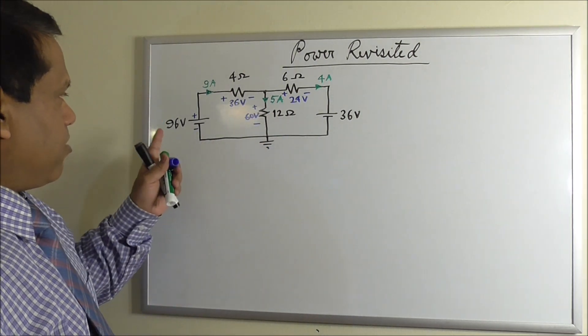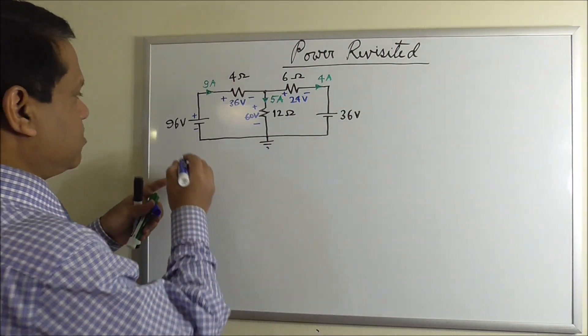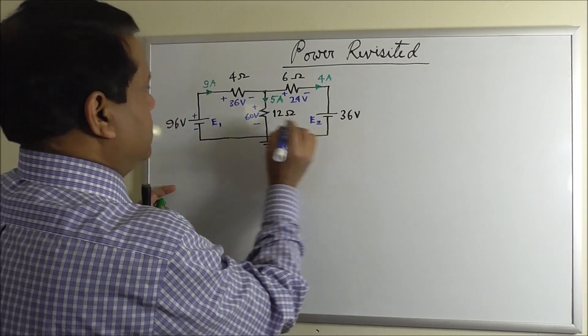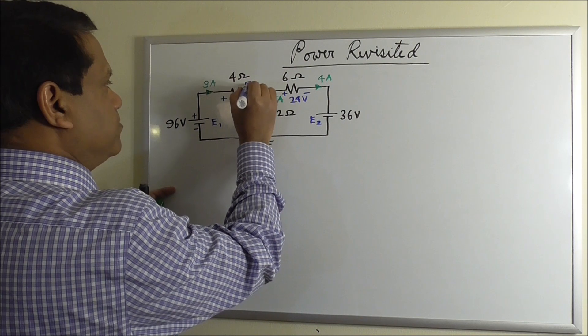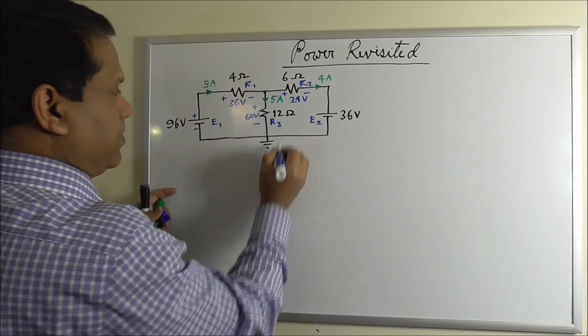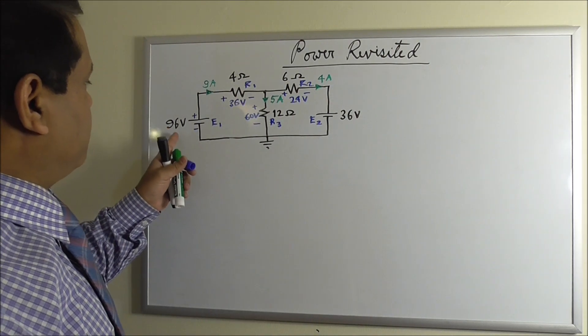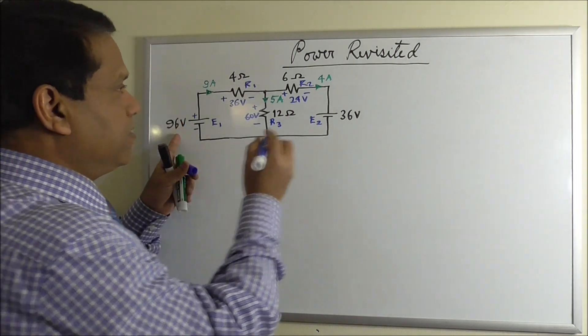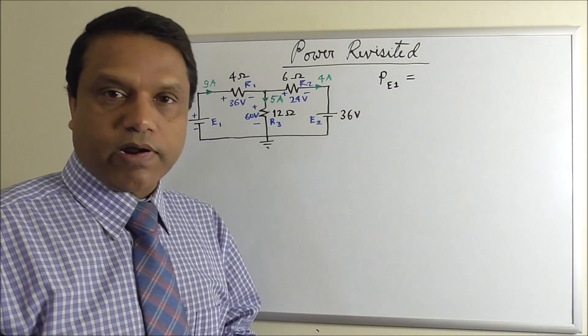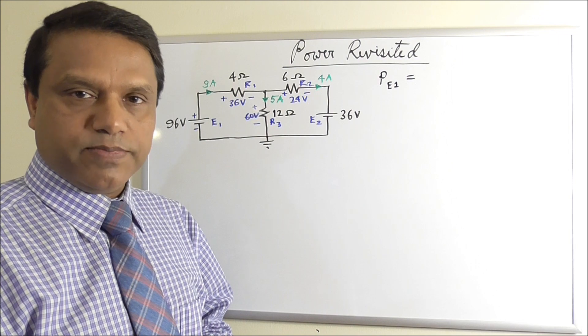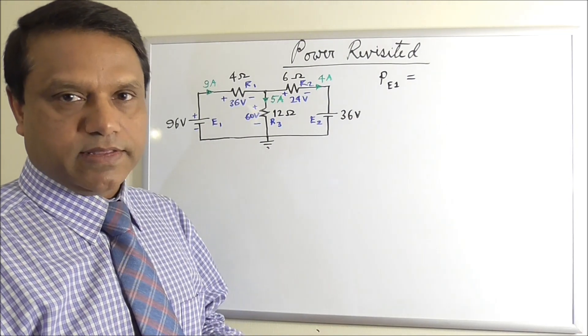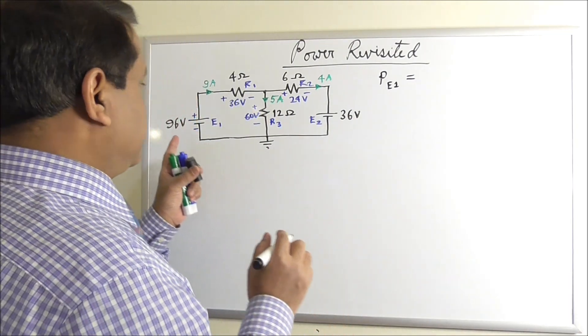Now, what is the power of this power supply? Let's call this E1, this E2, this R1, R2, and this R3. So power of this power supply will be V times I. We cannot use I²R or V²/R formulas, because those are only for resistors. This is not a resistor, this is a power supply. We have to use V times I. There is no other formula for it.